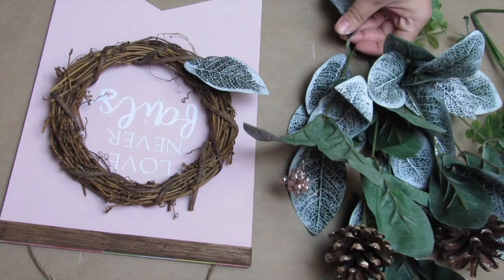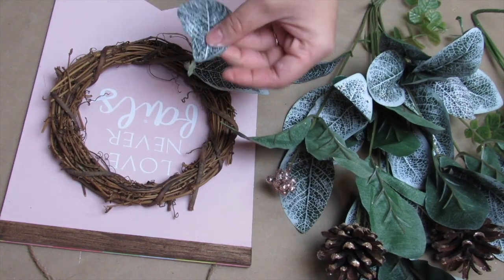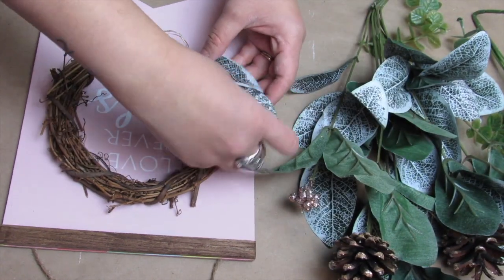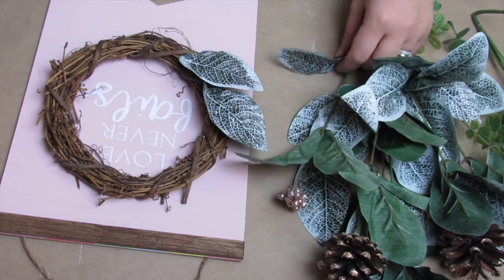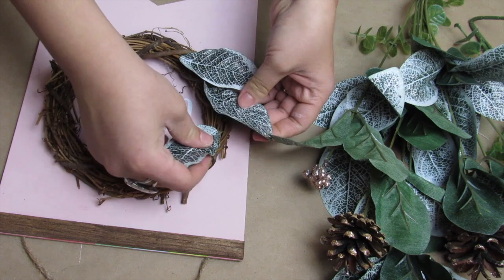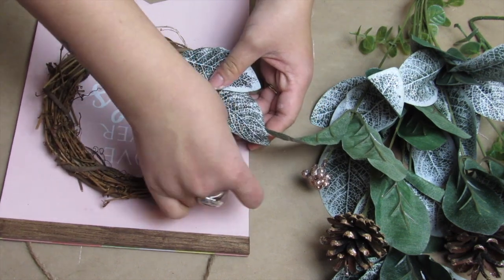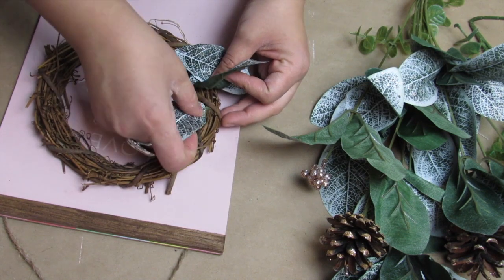Then I'm going to take this really pretty frosted eucalyptus. I've used this in so many of my winter projects this year. This is from Walmart—you get this big, full bunch with the pine cones and kind of the frosted berries for $3.97 or $4.97. I absolutely love this greenery.